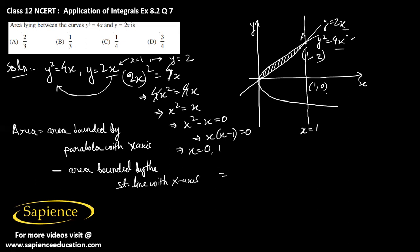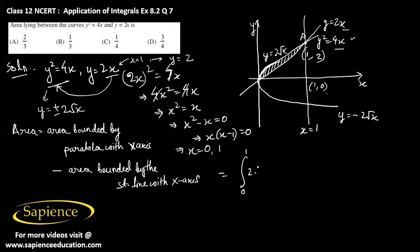The area bounded by the parabola with the x-axis requires us to use the branch above the x-axis. From y² = 4x, we get y = ±2√x. The part above the x-axis is y = 2√x. So the required area equals the integral from 0 to 1 of 2√x dx, minus the integral from 0 to 1 of 2x dx.